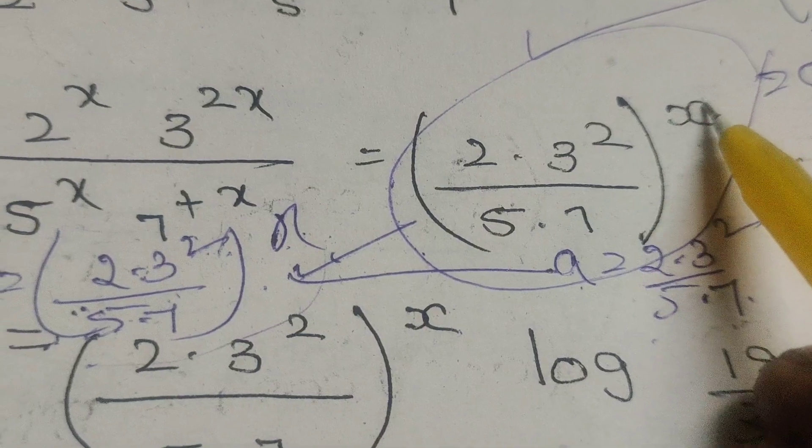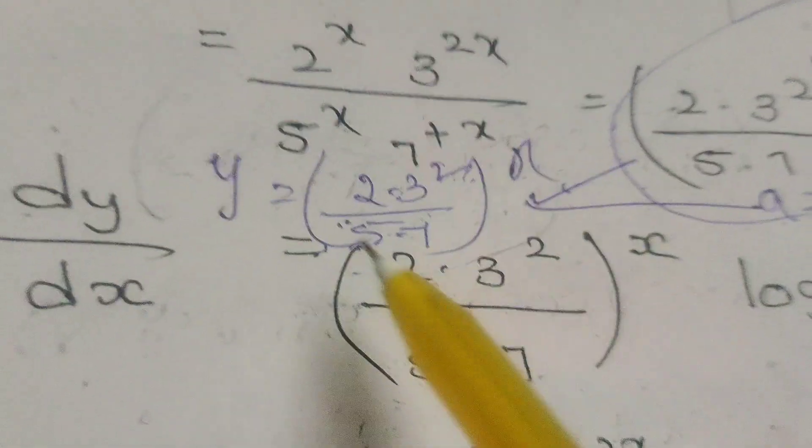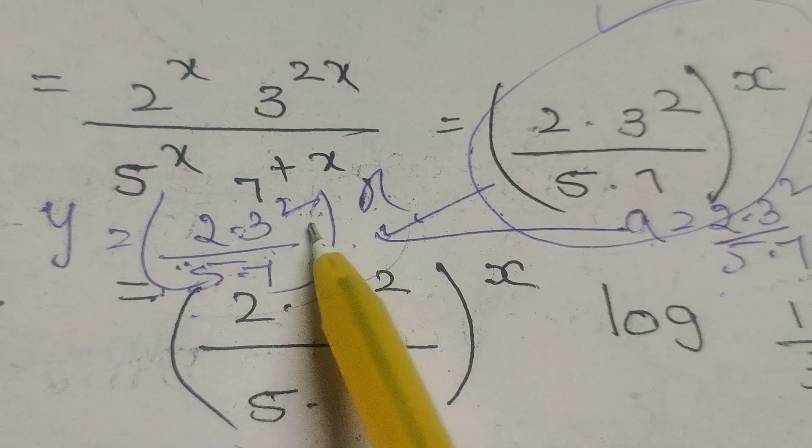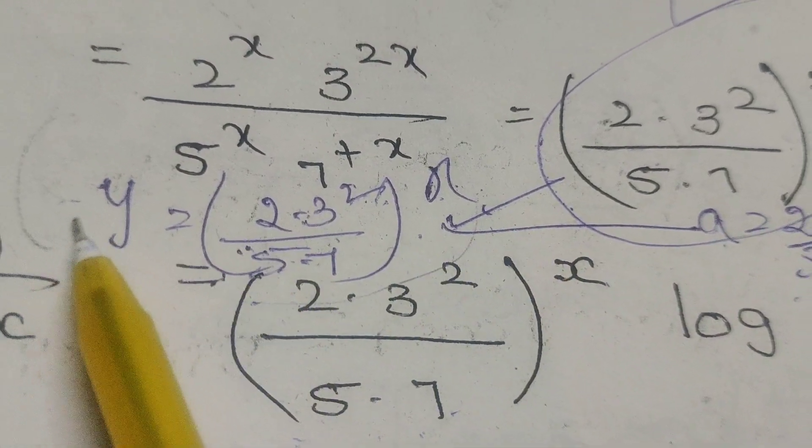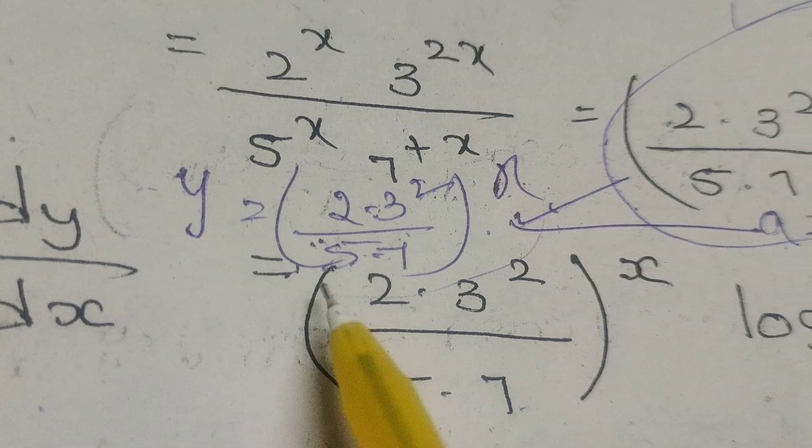Now, here write y equals 2 into 3 square by 5 into 7 whole power x. Now, differentiate this. dy by dx equals to.